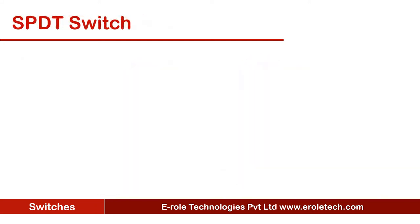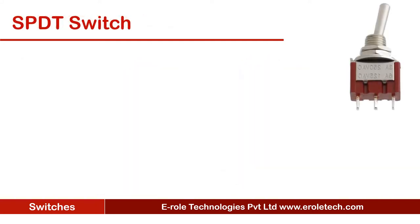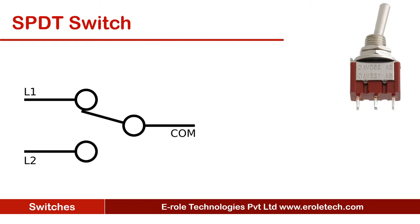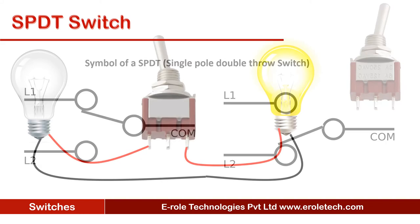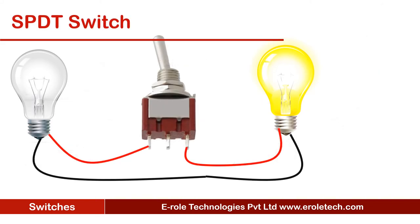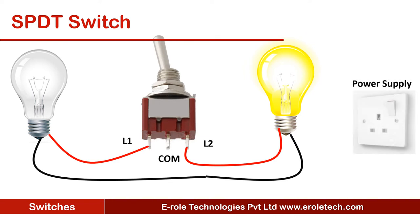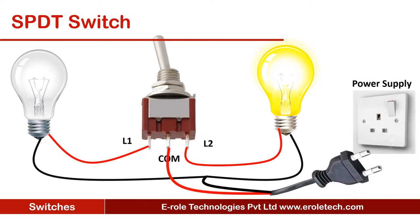There is another type of switch called the single pole double throw, or SPDT switch. This switch has three pins. The middle pin is called the common pin. To use this switch, its lever is pushed left or right. When its lever is pushed to the right, the common pin connects internally to the left pin, and when the lever is pushed to the left, the common pin connects to the right pin.